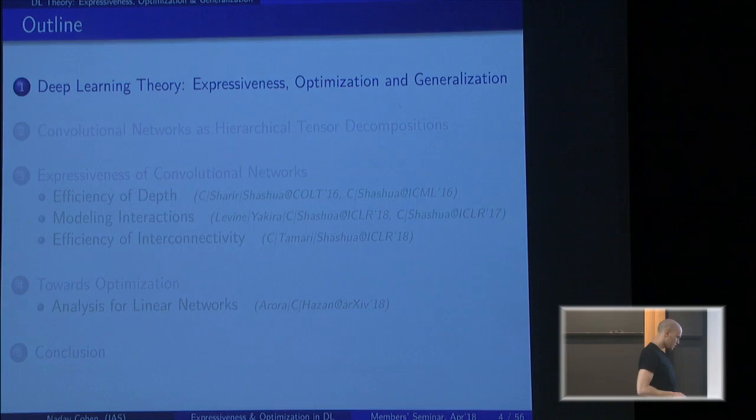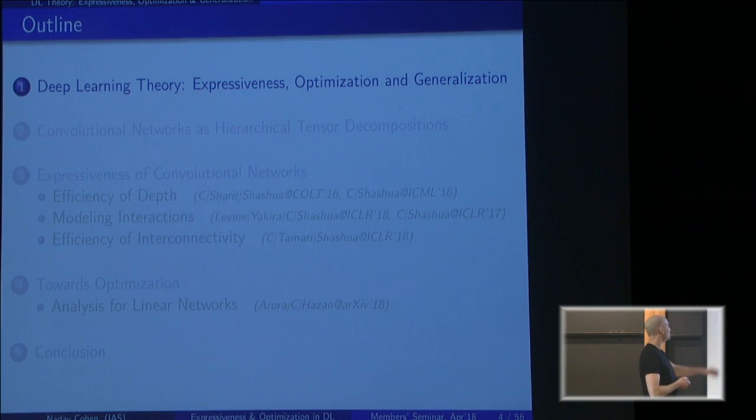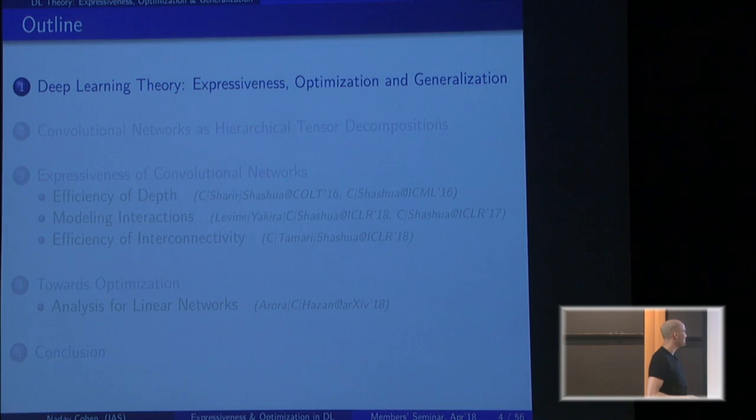We're going to start with a personal perspective — one that at least some people here have heard in one way or another — on deep learning theory, and in particular on expressiveness, optimization, and generalization. After about ten minutes of overview, I'll start talking about my actual works: an equivalence between convolutional networks and hierarchical tensor decompositions, and results on expressiveness and optimization.